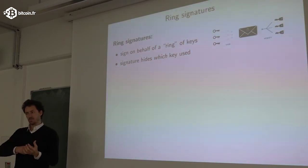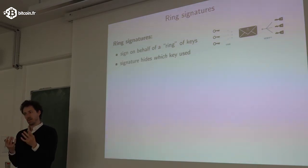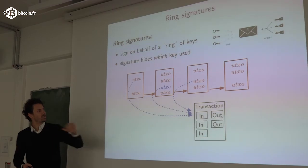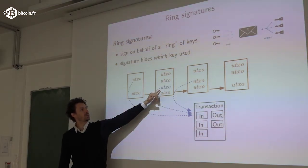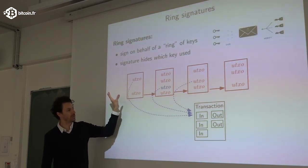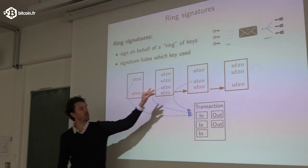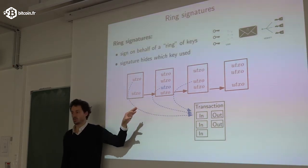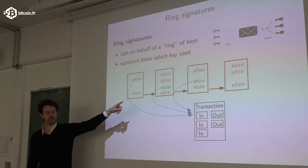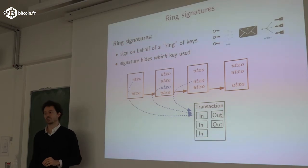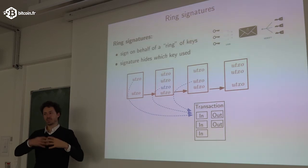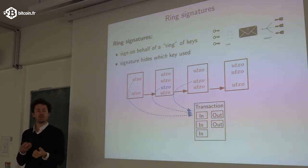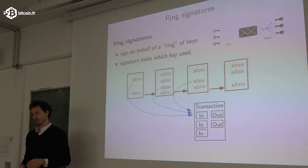In Bitcoin, when you make a transaction, you use the secret key corresponding to the address you spend. With ring signatures, if you want to spend an unspent transaction output, you pick random other unspent transaction outputs from the blockchain and make a ring signature corresponding to all those public keys. You create a new transaction, making a ring signature that signs in the name of many unspent outputs including the one you actually spent — but it does not reveal which one. So you're not completely anonymous, but you've hidden yourself in a set of other senders.